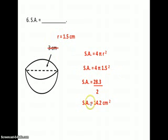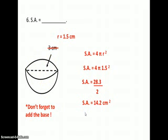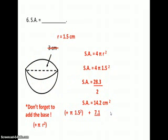Since we're looking for total surface area, we need to include the circular base — that's another part of the surface after we cut the sphere in half. So we add the base using the formula π r squared. The radius is 1.5, so we plug that in and add it to the half-sphere area we already have. Our final answer is 21.3 square centimeters.